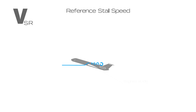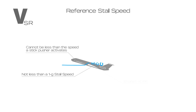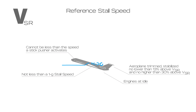Reference stall speed is represented as VSR. While VS is defined as the stall speed at which the aeroplane is controllable, VSR may not be less than 1g stall speed. VSR is determined during testing and is the basis speed for establishing other speeds such as takeoff safety speed and the reference landing speed. VSR cannot be less than the speed at which a stick pusher activates, if such a device is installed. VSR is determined when the engines are idle; the aeroplane is trimmed and stabilised no lower than 13% above VSR and no higher than 30% above VSR. The pitch is adjusted to decrease the speed no more than 1 knot per second.